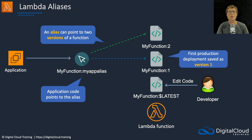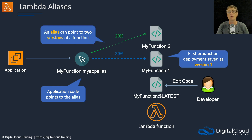We can actually have the alias point to two versions at the same time — this is a blue/green deployment. A certain percentage of traffic can go to one version or the other, and that's something you can configure. Here we have an 80/20 split in terms of the traffic distribution.